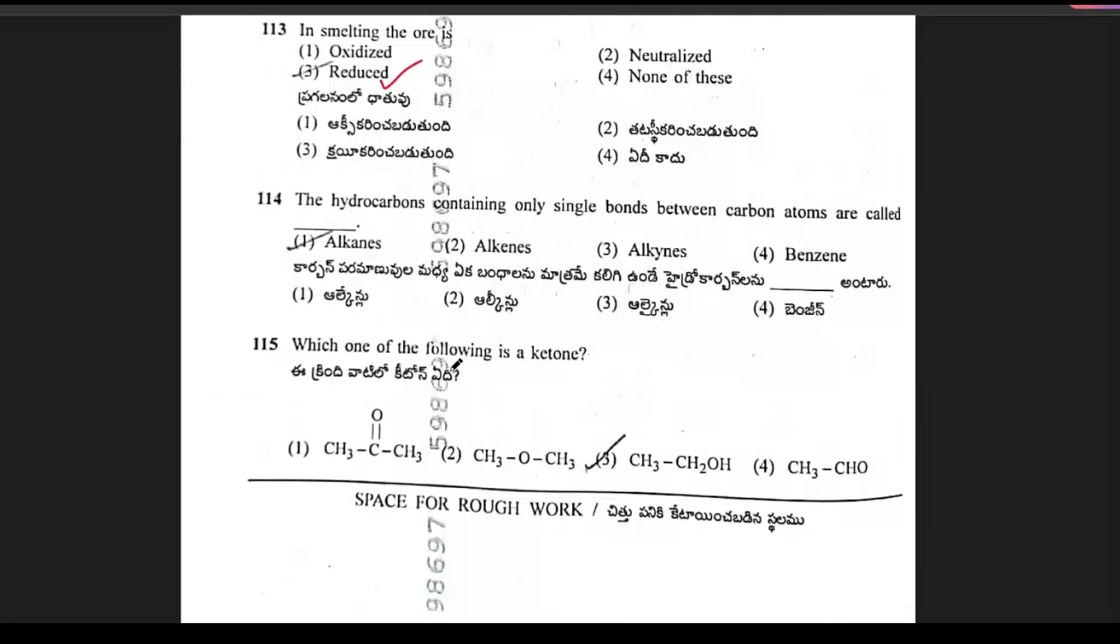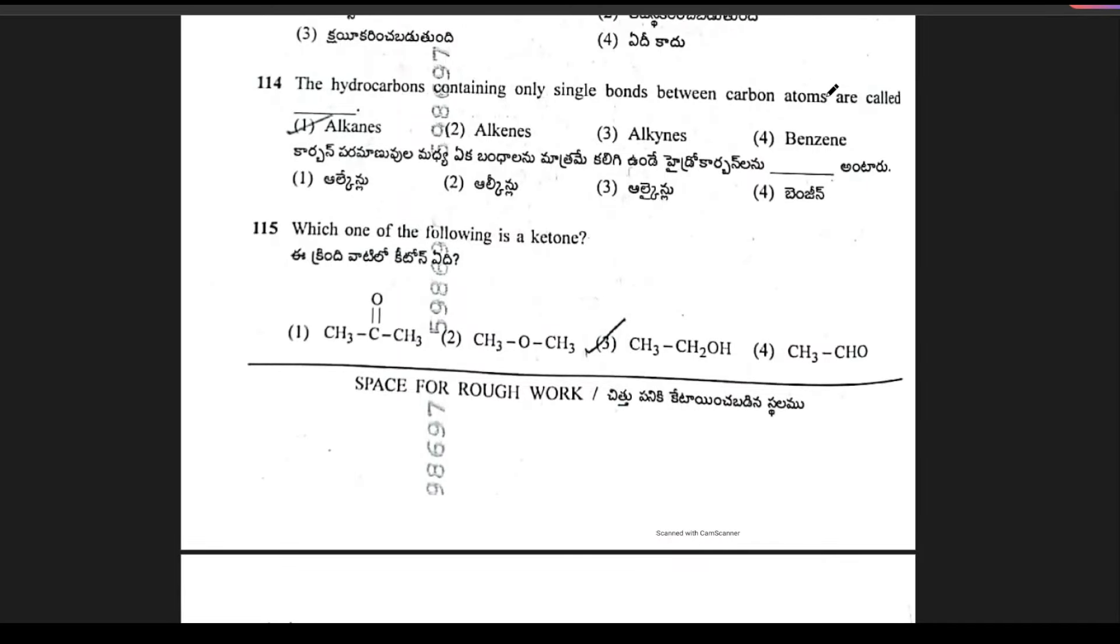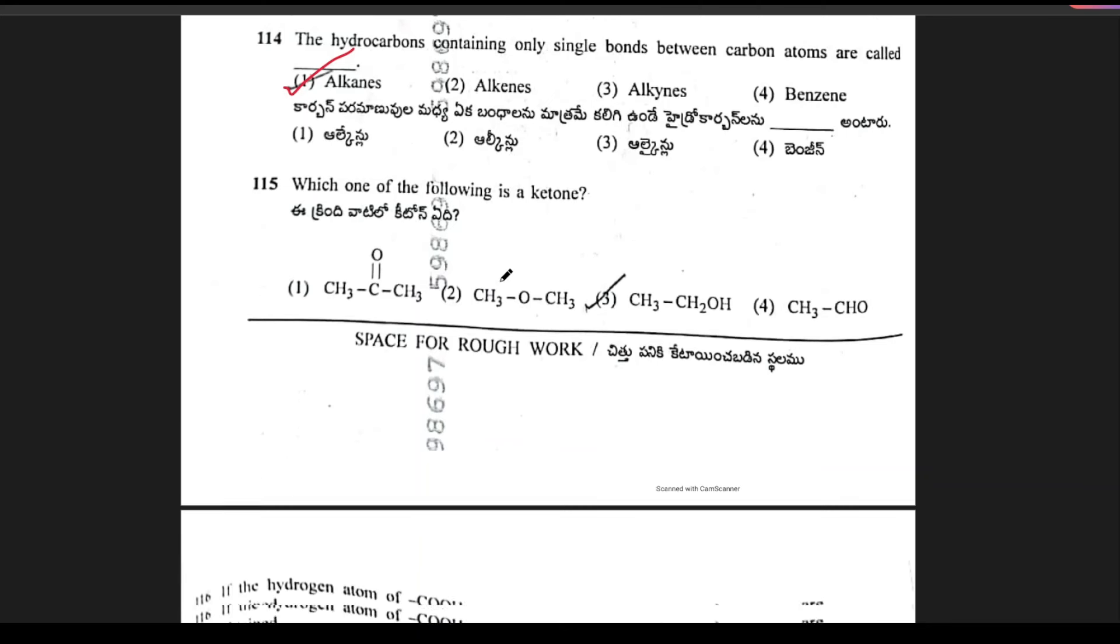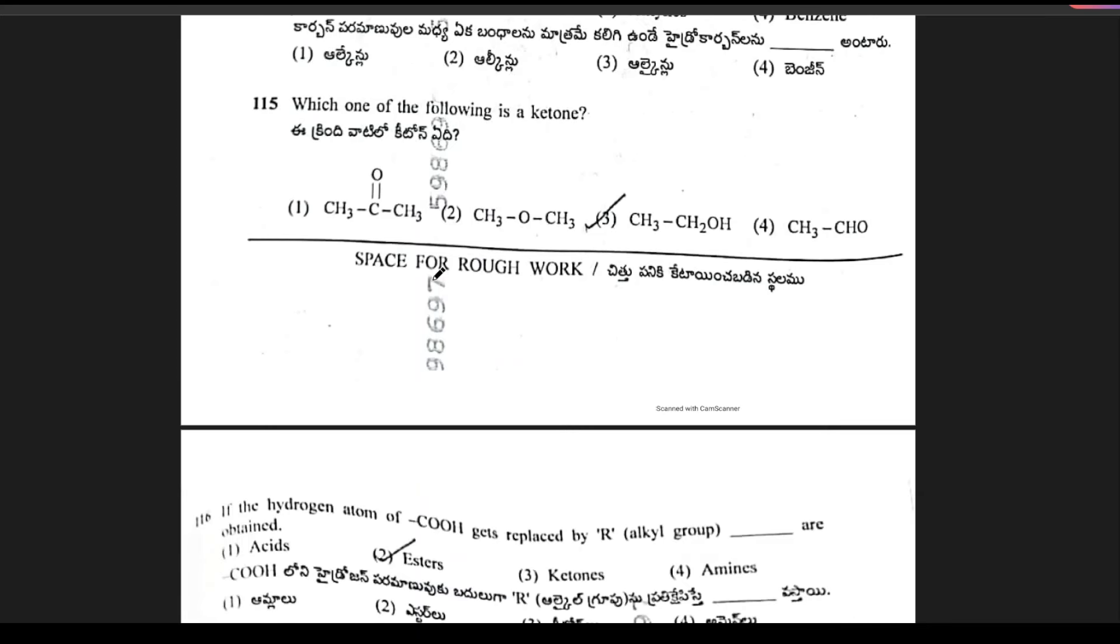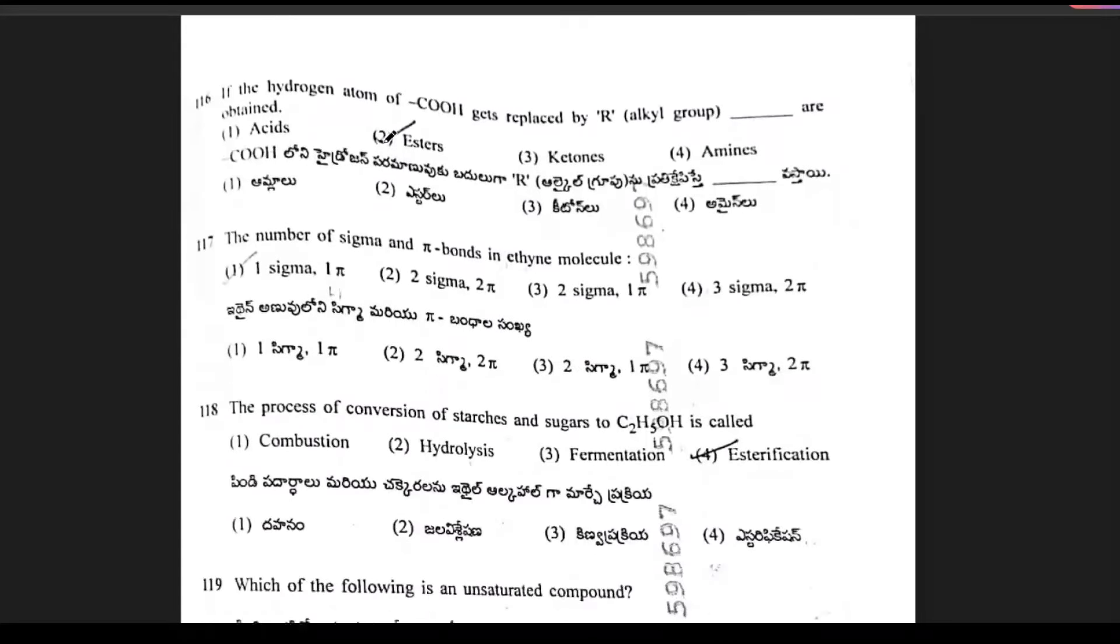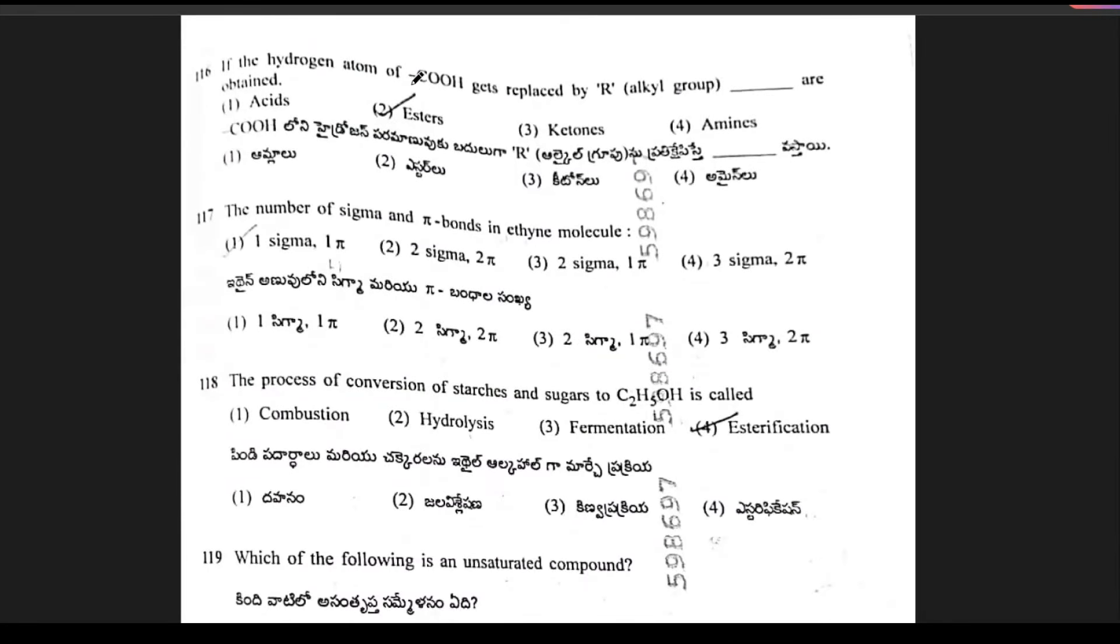The hydrocarbons containing only single bonds between carbon atoms are called alkanes. Next, which one of the following is a keto compound? Option A is the right answer. If the hydrogen atom of COOH gets replaced by R, then esters are obtained.